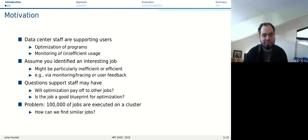If you look at data center staff supporting users, they optimize programs and proactively monitor inefficient usage. If you're a staff member and see an interesting job, a very efficient or inefficient job, you may wonder: is it worthwhile to optimize this job? Will it pay off if I look at the libraries used by this job? Will it benefit our users in general? Is it a good blueprint if I figure out this optimization strategy and can it be ported to other applications?